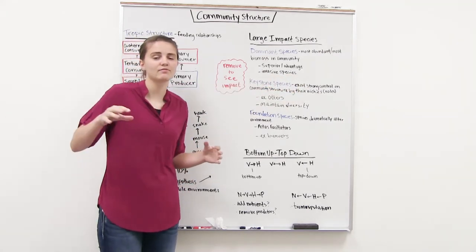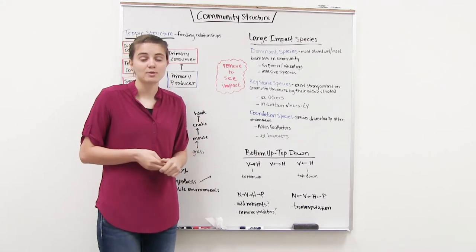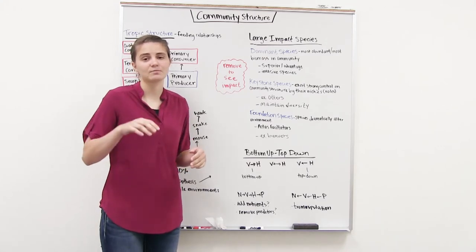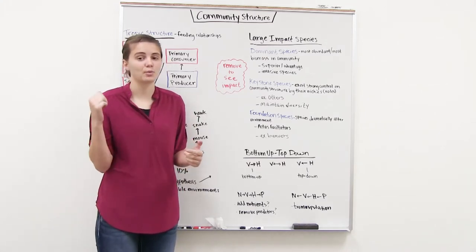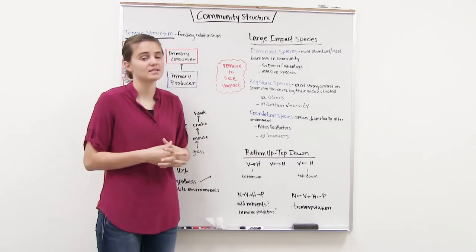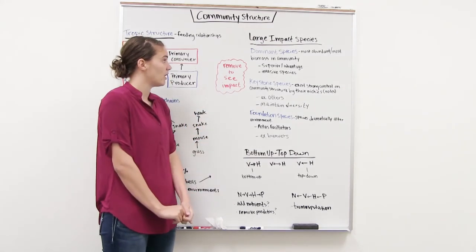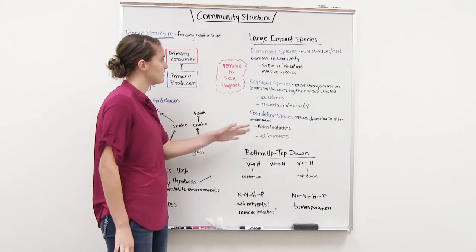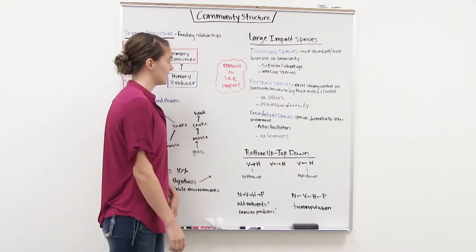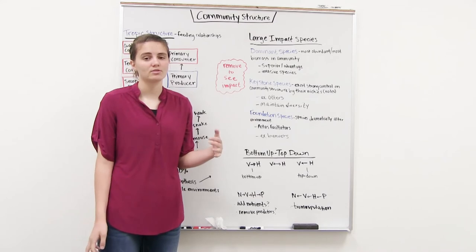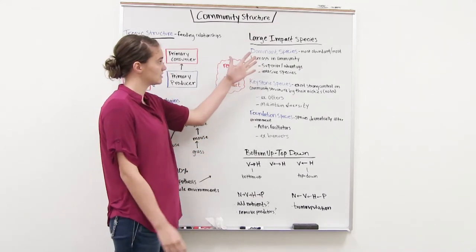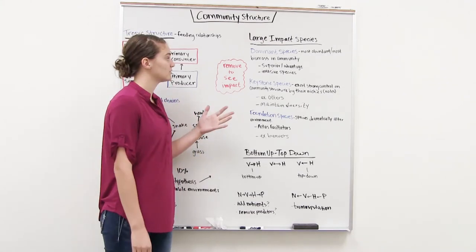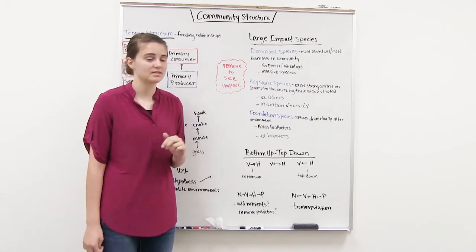Another reason dominant species arise is invasive species. A species coming in from an outside area often has advantages because it doesn't have any predators yet, or it has some advantage developed elsewhere, so it starts to dominate the community. For all three of these species types, the way we see their impact is by removing them and observing the changes that undergo the community. There are experiments in your book that show further examples.